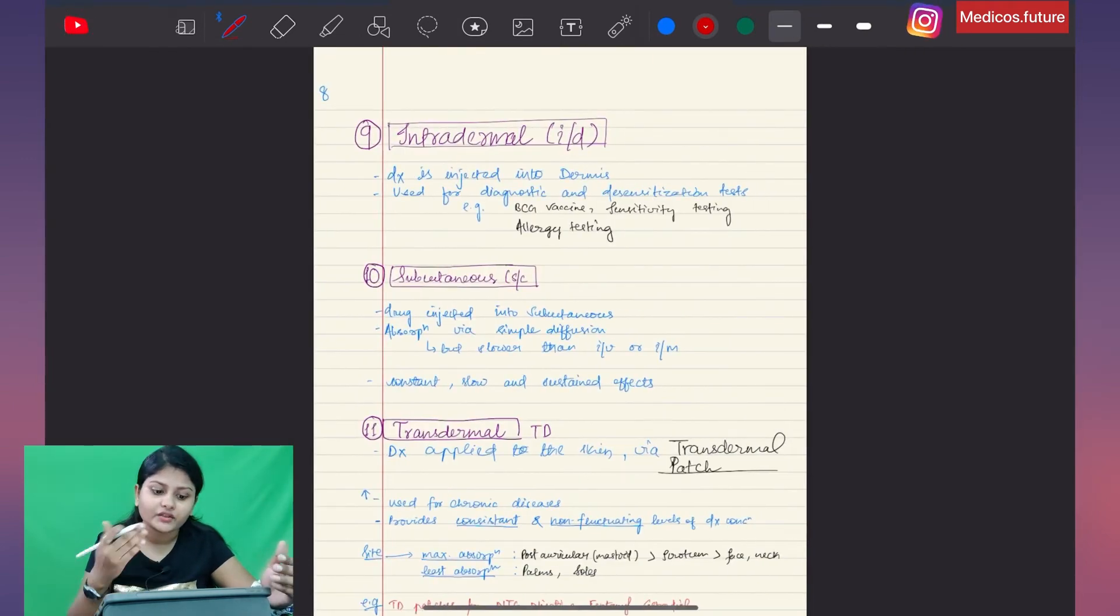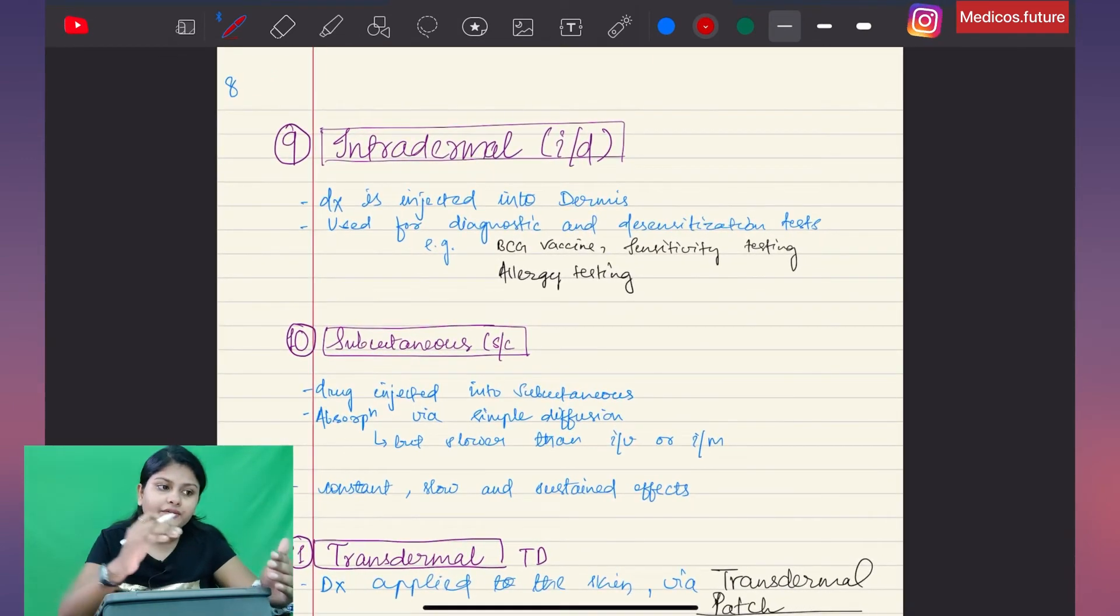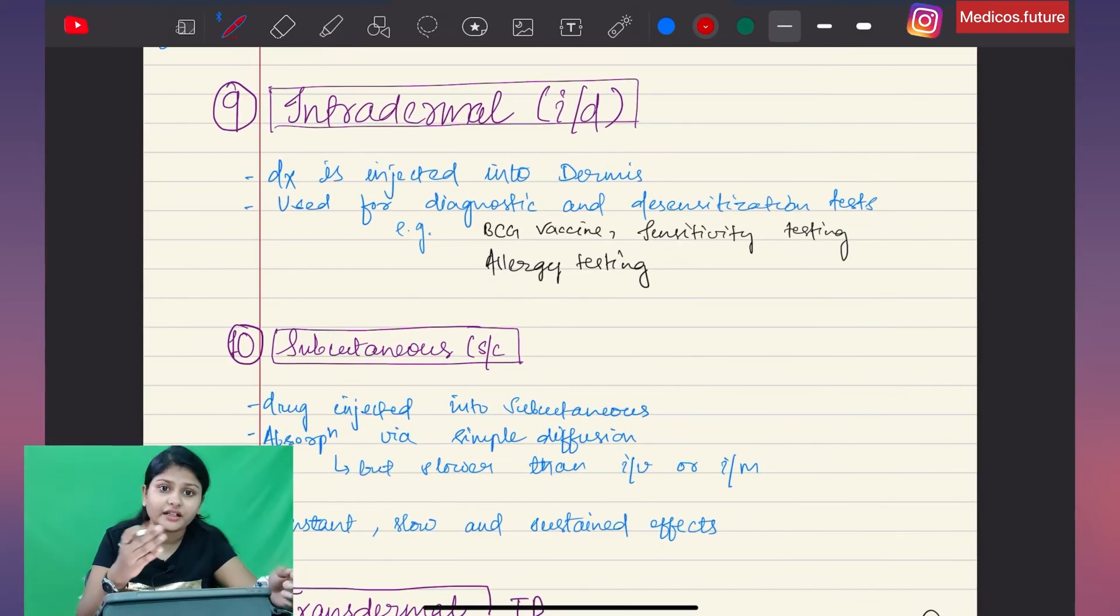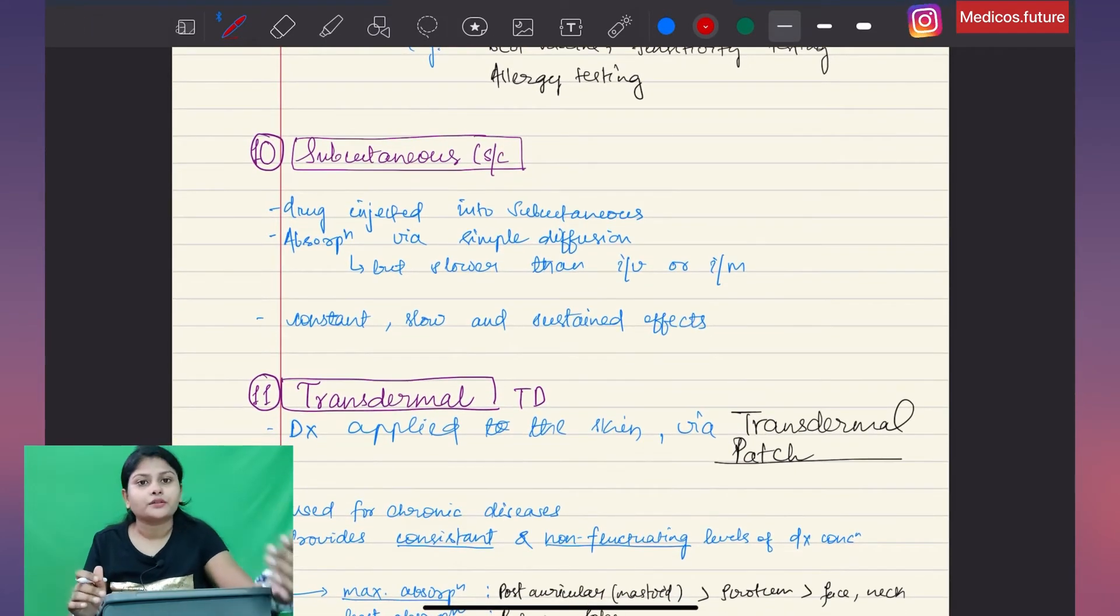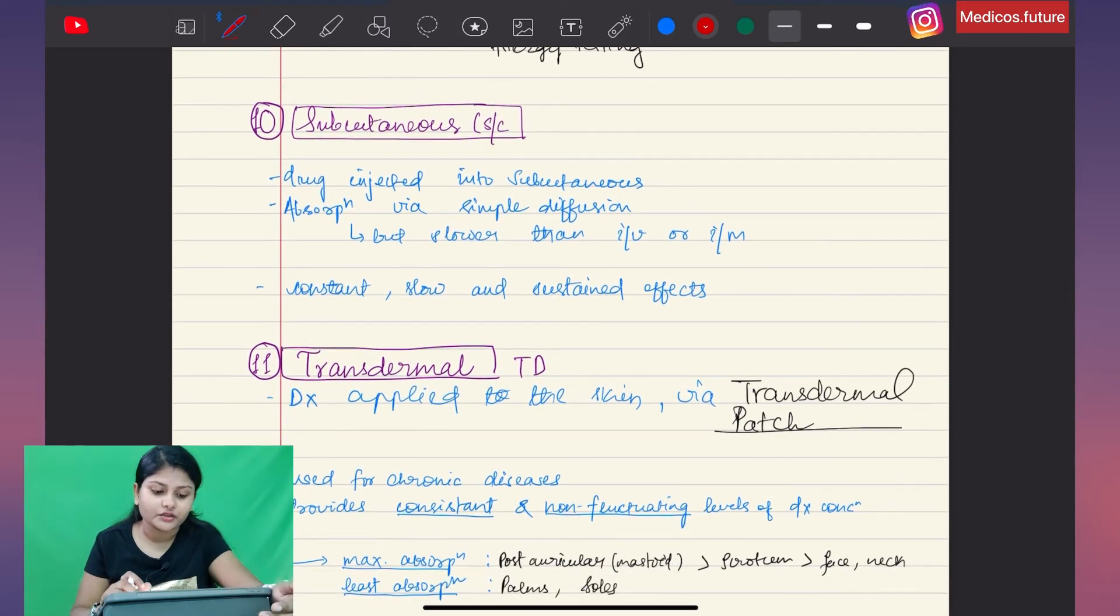Then we have intradermal ID. The drug is injected into the dermis layer of skin. This is mostly for sensitivity testing or diagnostic testing. This is mostly used for BCG vaccine and allergic testing.